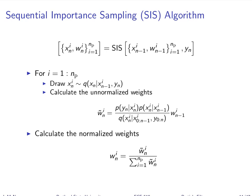Likewise, when looking at the process model and prior, it's only probable state transitions from time n minus 1 to n where weights remain large. If you draw a sample that's completely different than where it was at n minus 1 and inconsistent with your prior expressed by the process model, that probability will be very small and drive that weight down. In order for a trajectory to have a large weight, both the likelihood and the process model probability have to be large — otherwise it rapidly drives that weight to zero.